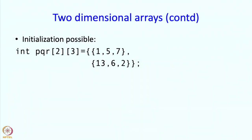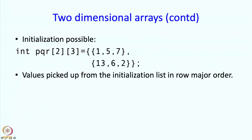When you define two-dimensional arrays, you can simultaneously initialize them. For example, here we have an array PQR of 2 rows and 3 columns. You give the initialization for the 0th row and then the first row, each in braces, supplying 3 values because the second dimension is 3. The values are picked up from the initialization list also in row-major order, the same order in which the data is stored on the computer.